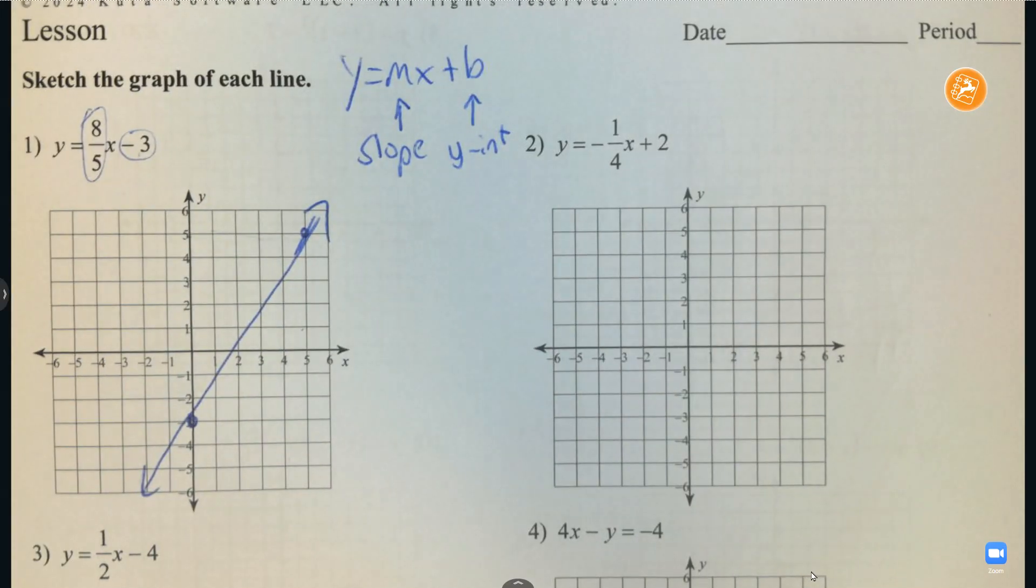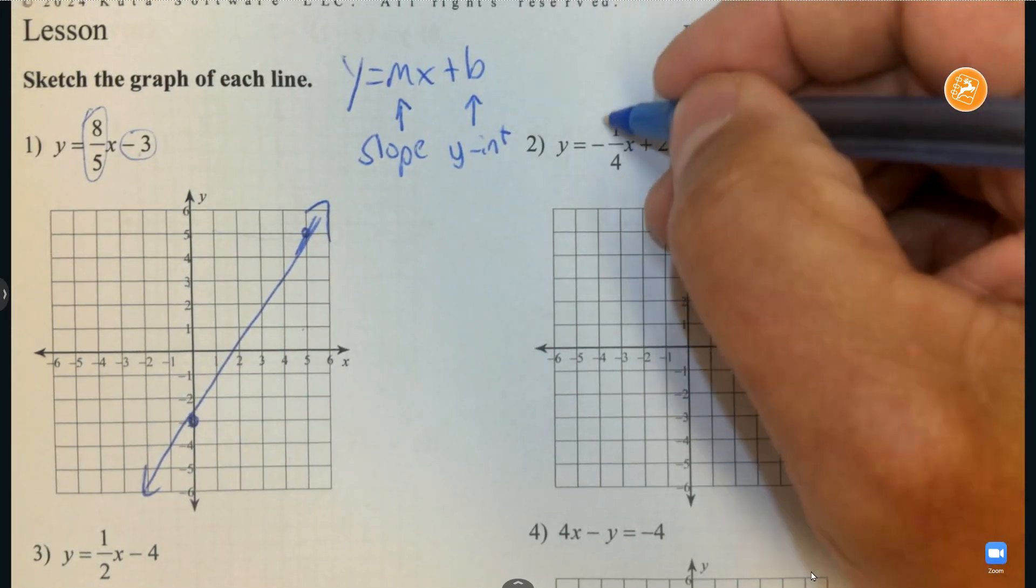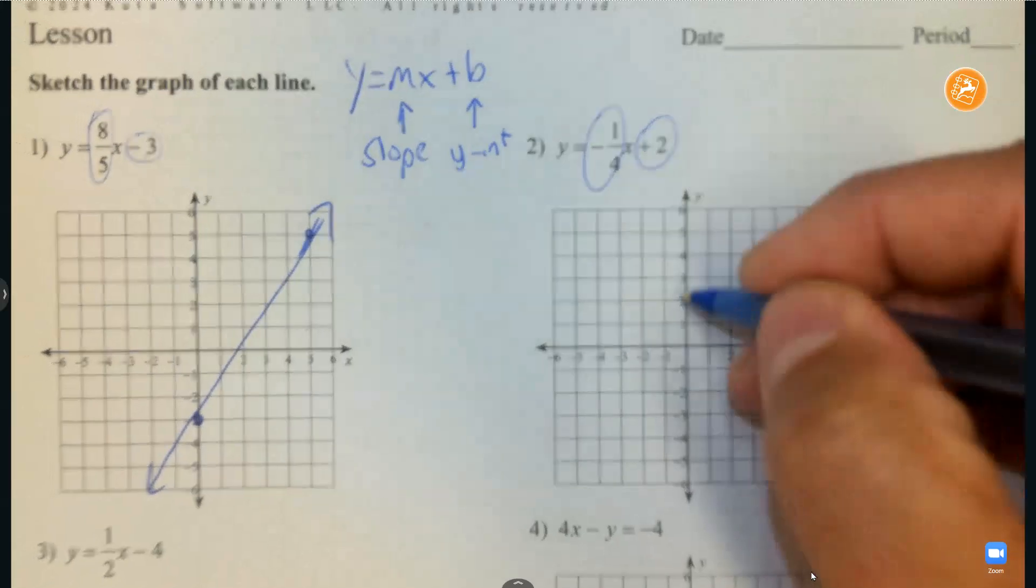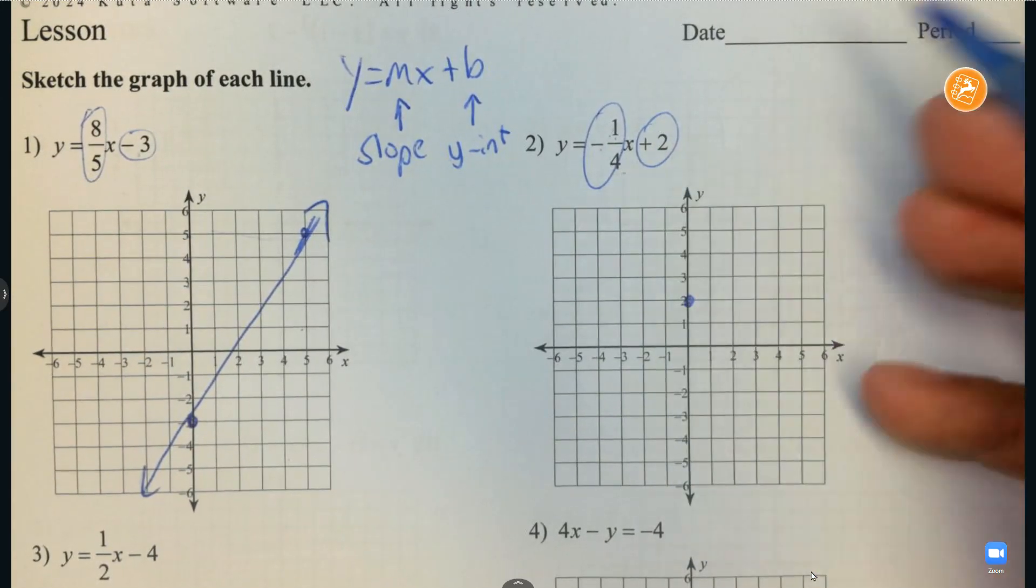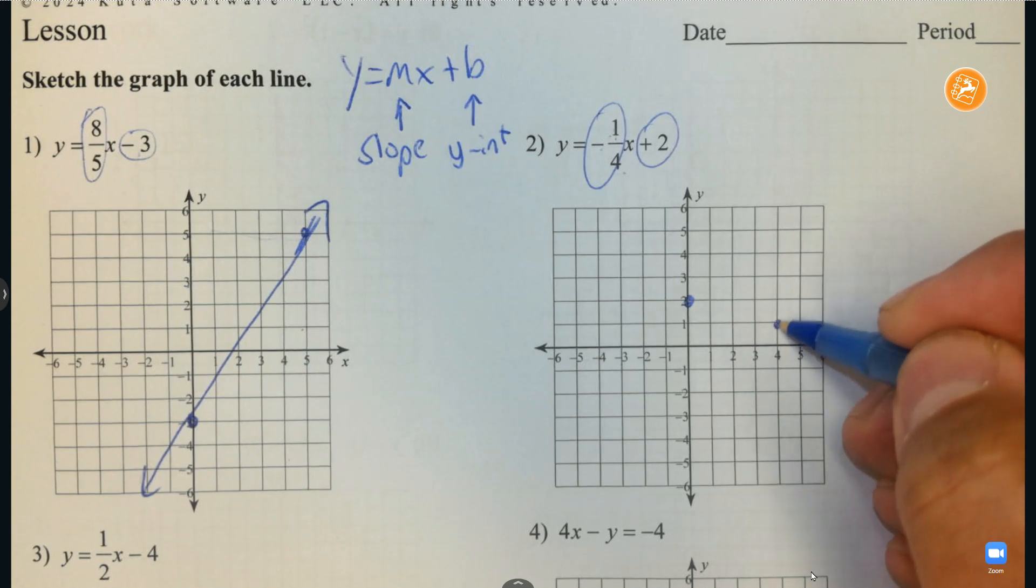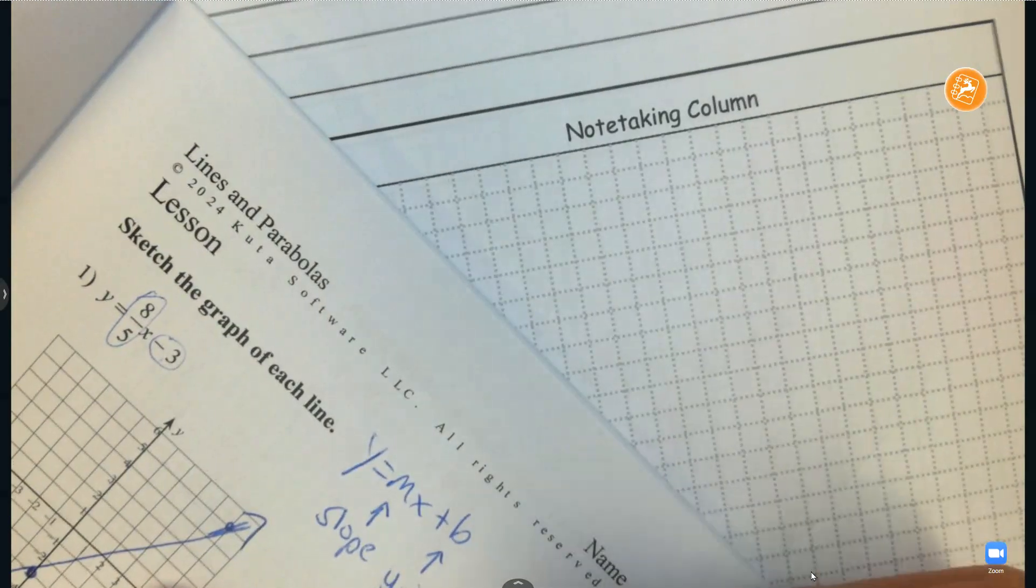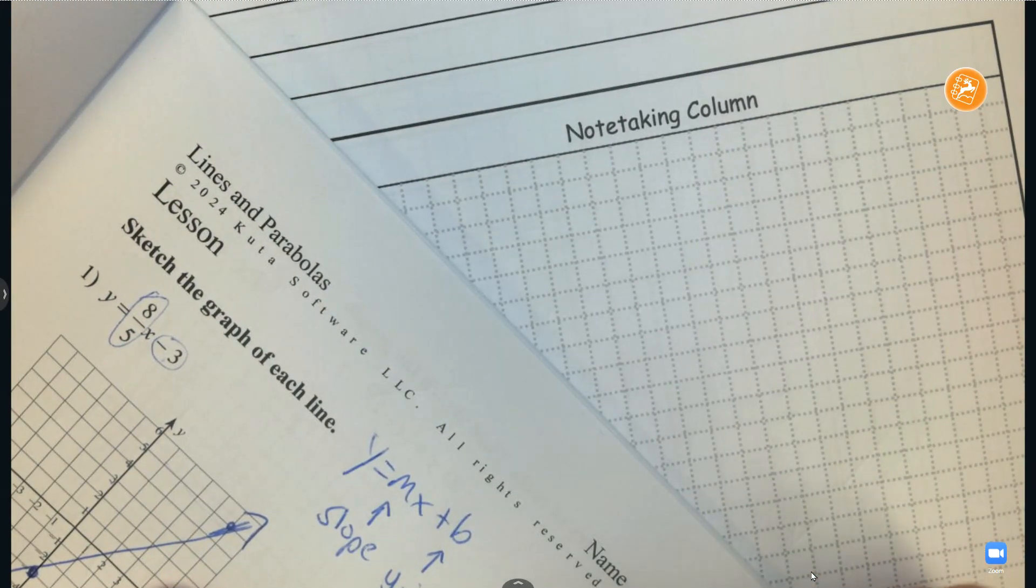Try number 2, same form. So we have our slope and our y-intercept. Start at positive 2. This tells me to go down 1 and to the right 4. I want you to notice that a positive slope rises to the right, and negative slope falls down to the right. And then you have your line.